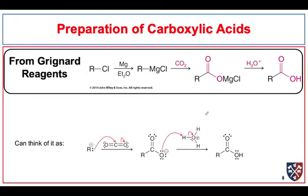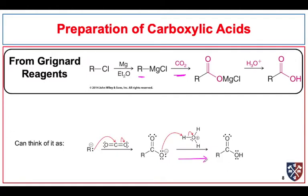We can react Grignard reagents with carbon dioxide — this is a fairly common method of forming carboxylic acids, seen a lot in undergraduate laboratories. We take our highly nucleophilic alkyl magnesium chloride or bromide in the presence of carbon dioxide. You can think of it as an anion acting as our nucleophile attacking the central carbon of carbon dioxide, and then we work that up in the presence of a stronger mineral acid to get our carboxylic acid.